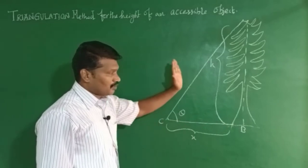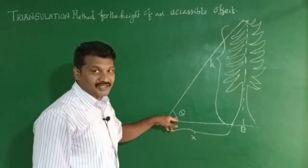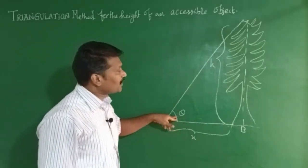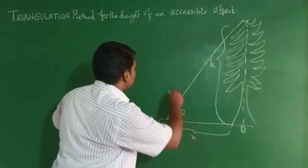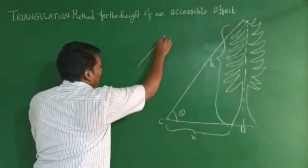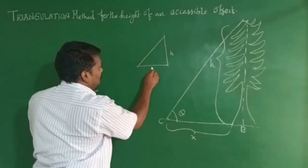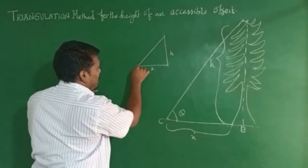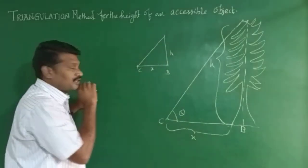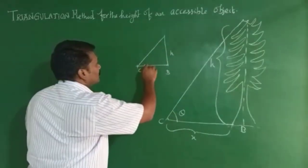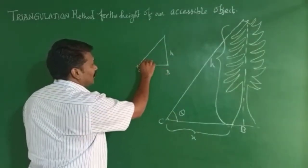If we look at the angle of elevation, the angle of elevation is theta. The height of the tree is h. This is x — the distance from the tree. So now we can calculate the angle of elevation.